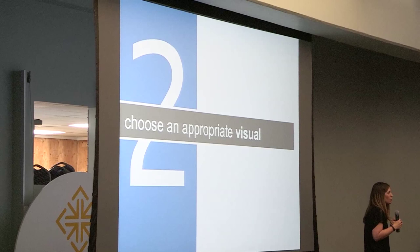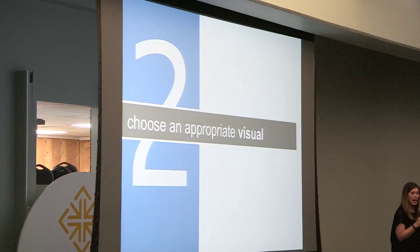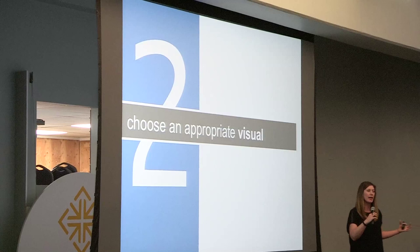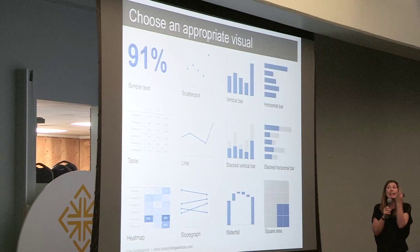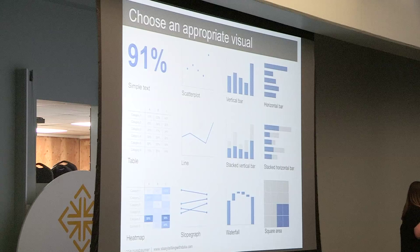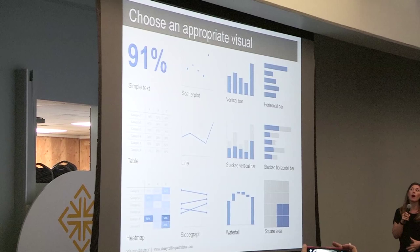I went back over my work over the course of a year and categorized every single visual that I made — several hundred visuals. I thought this was going to result in many categories with a really long tail. So I was surprised to actually find that 99% of what I created can be categorized into just 12 categories — categories you're probably mostly pretty familiar with.